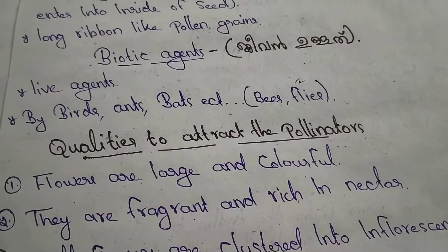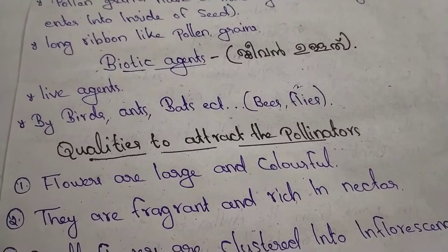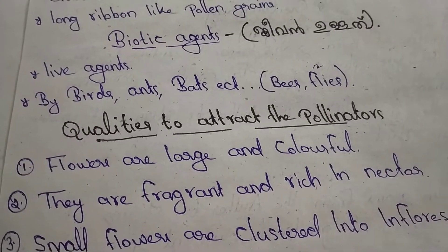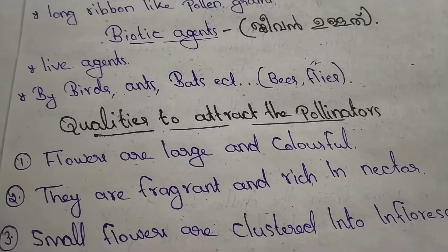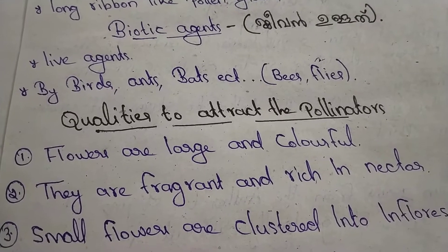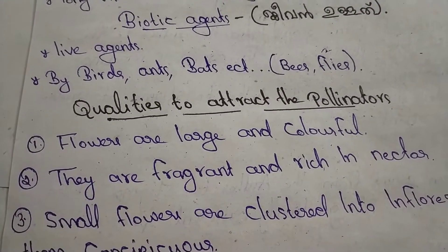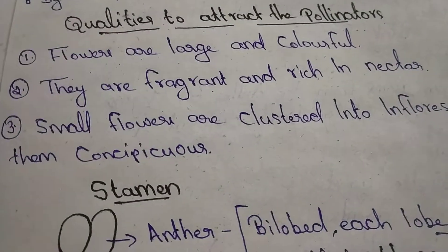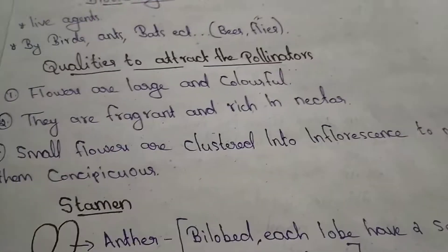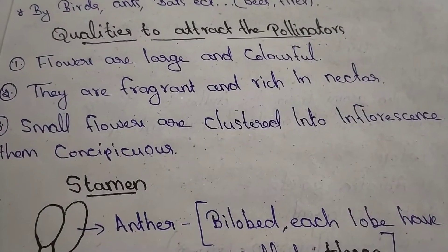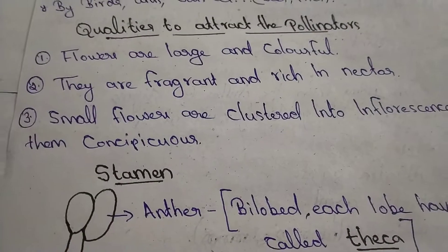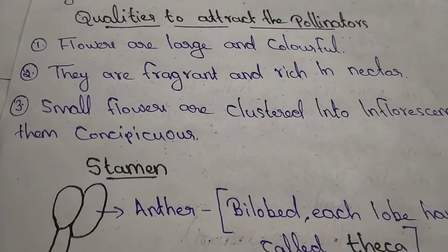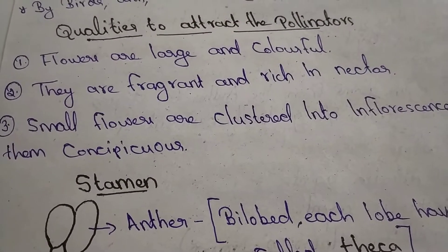The flower is large and colorful. Honeybees are attracted by these qualities. They are fragrant and rich in nectar. Small flowers are clustered into inflorescence to make them conspicuous.